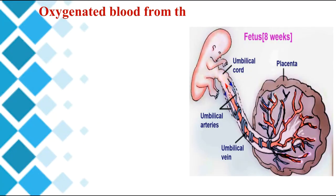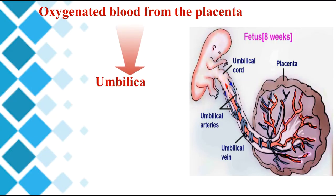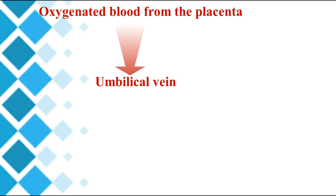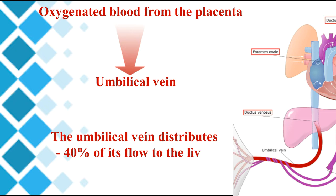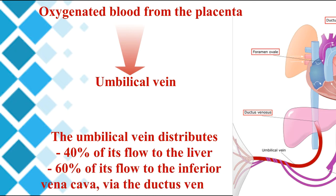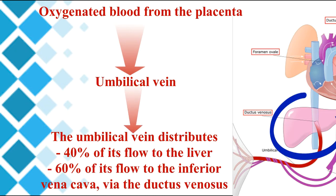Oxygenated blood from the placenta returns via the umbilical vein. The umbilical vein distributes 40% of its flow to the liver and 60% of its flow to the inferior vena cava via the ductus venosus.